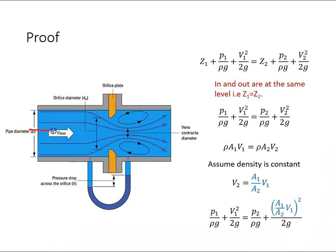When the flow comes in and when it goes out, they're both at the same height z. If the height is the same, we can cancel both of these values.